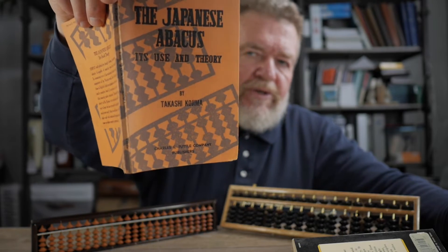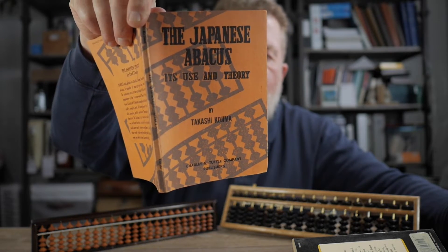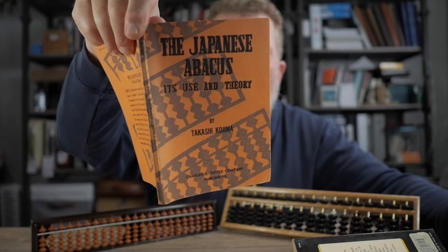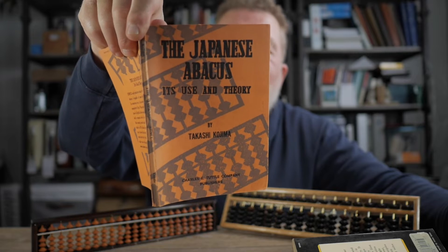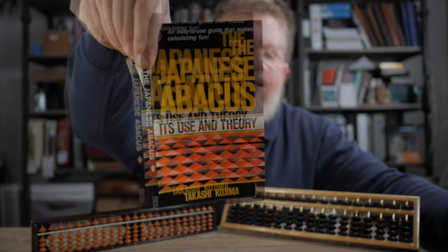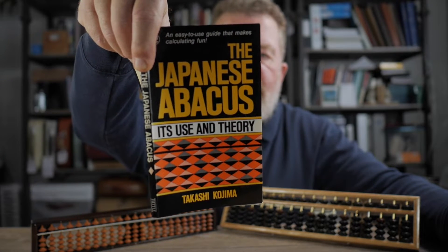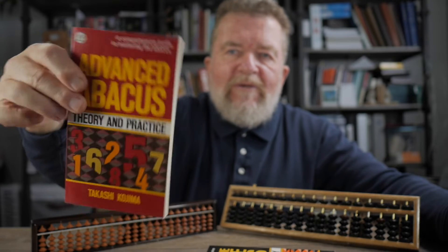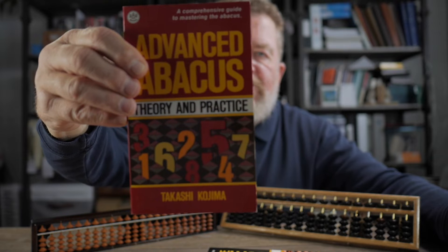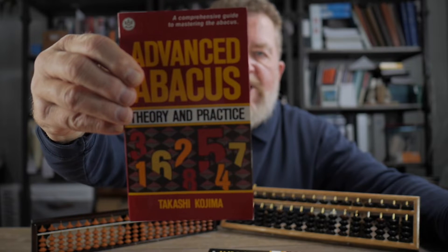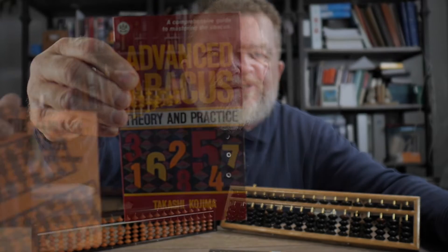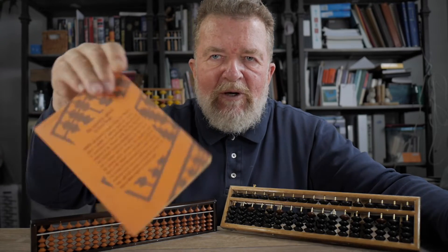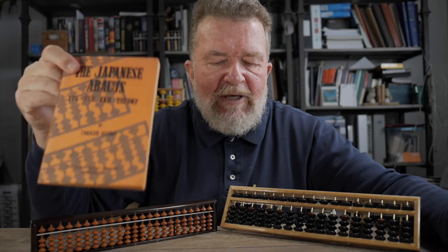So this is Kojima's book that I knew when I was young. The first edition is April 1954. This particular version was the 23rd printing in 1968. Then more recently, this is the 34th printing that was printed in 1991. And also, there is a second edition or a second volume called Advanced Abacus Theory and Practice. These were published by the Charles E. Tuttle Company.